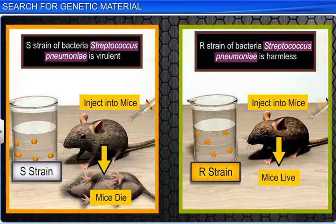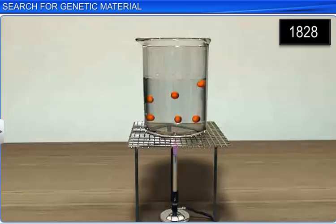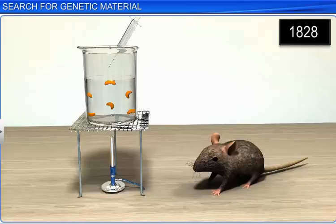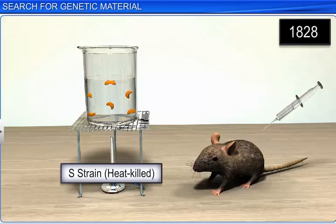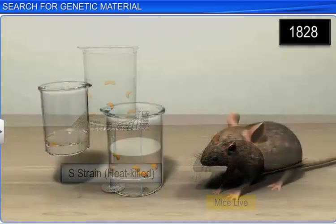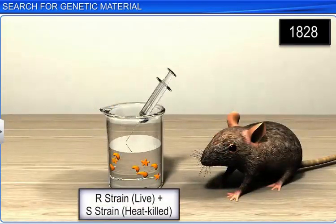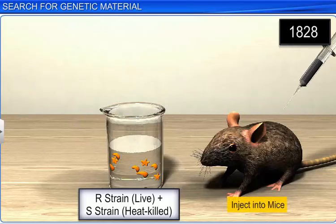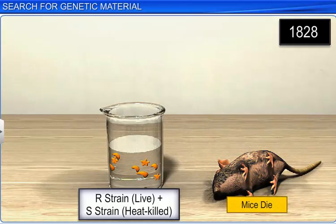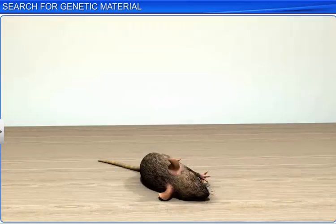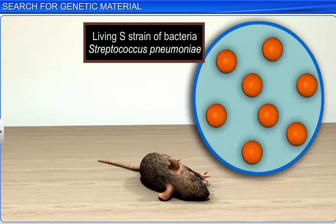Moreover, Frederick also found that heating killed the bacteria. So when he injected heat-killed S strain bacteria into the mice, they did not die. On the other hand, when he injected a mixture of R strain bacteria and heat-killed S strain bacteria, the mice died. Surprisingly, he even recovered the living S strain of bacteria from the dead mice.